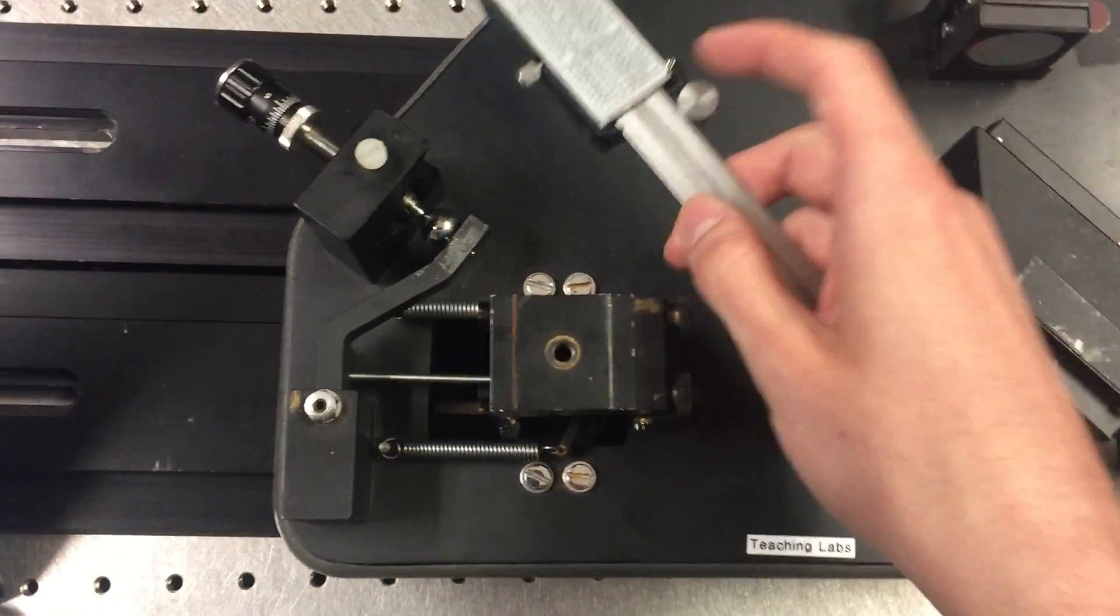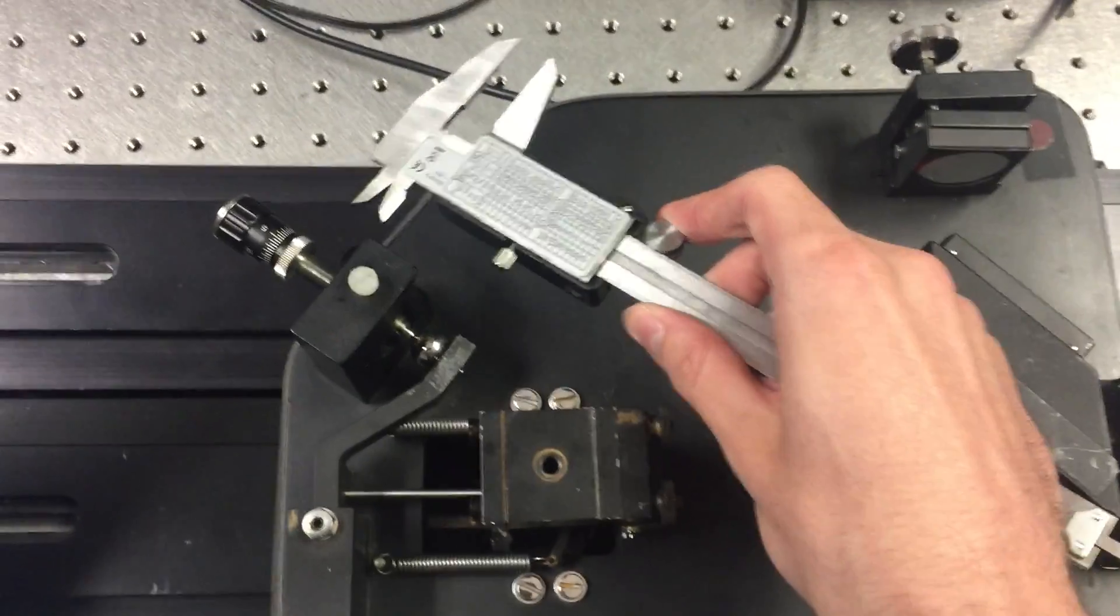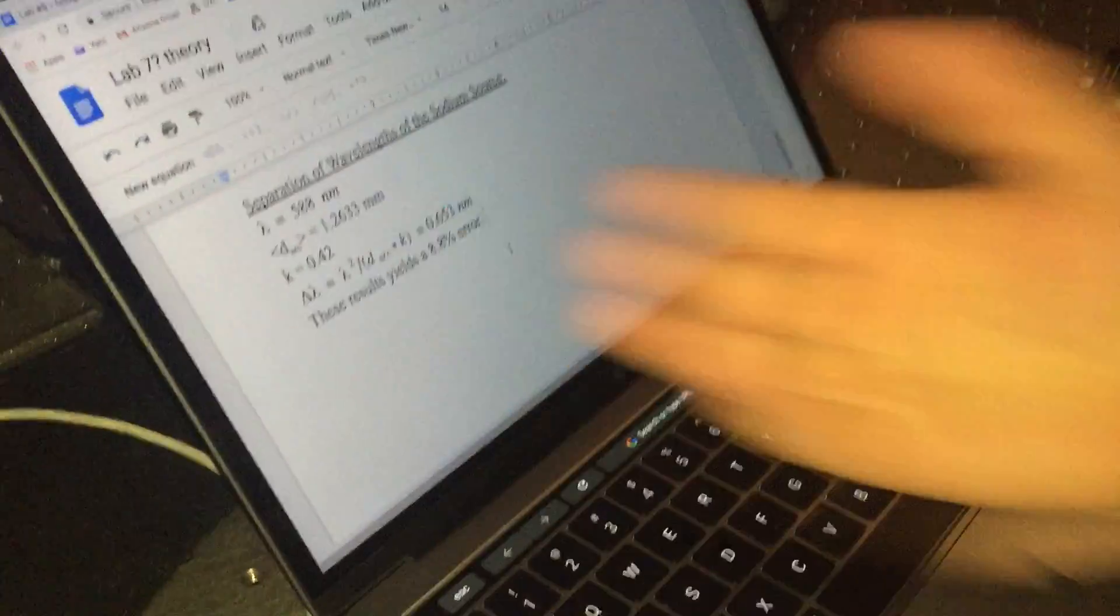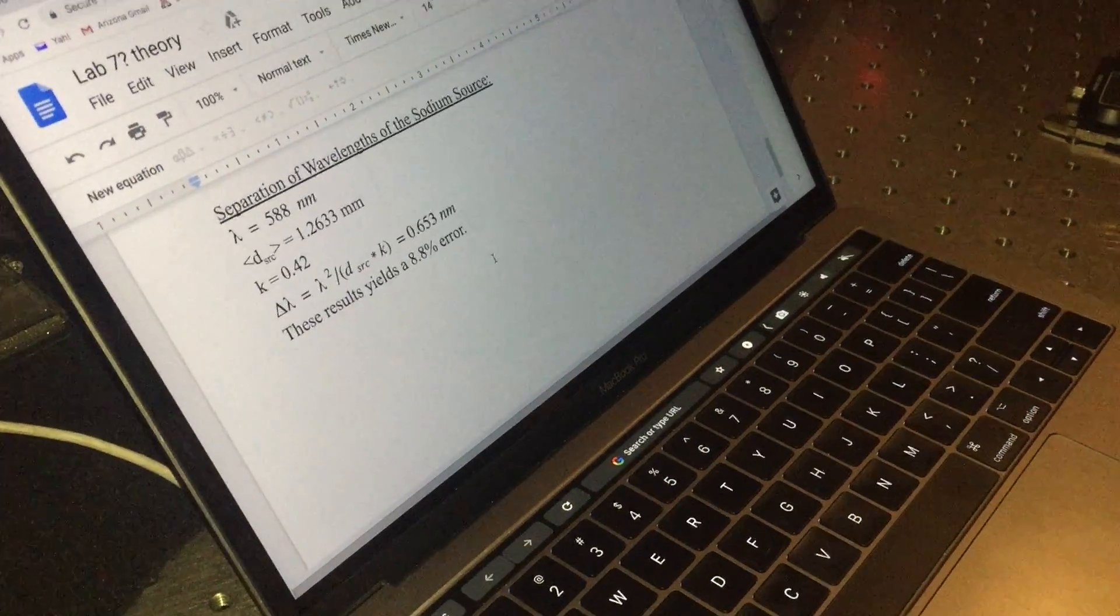That distance L corresponds to the travel distance of our micrometer here, as measured by the digital calipers. From our last experiment, we got a sodium wavelength of 588 nanometers, and then we averaged our distance from minimum to minimum to be 1.26 millimeters.